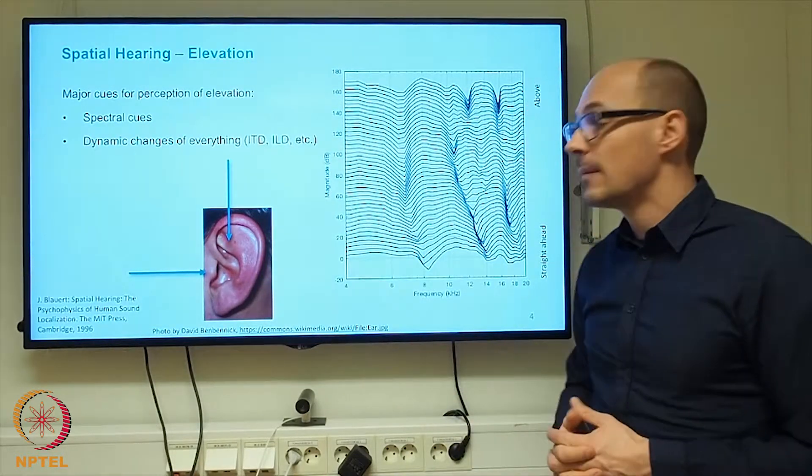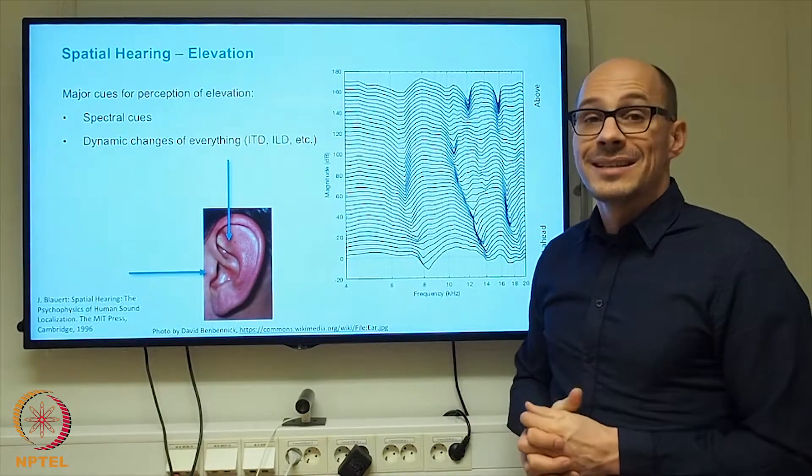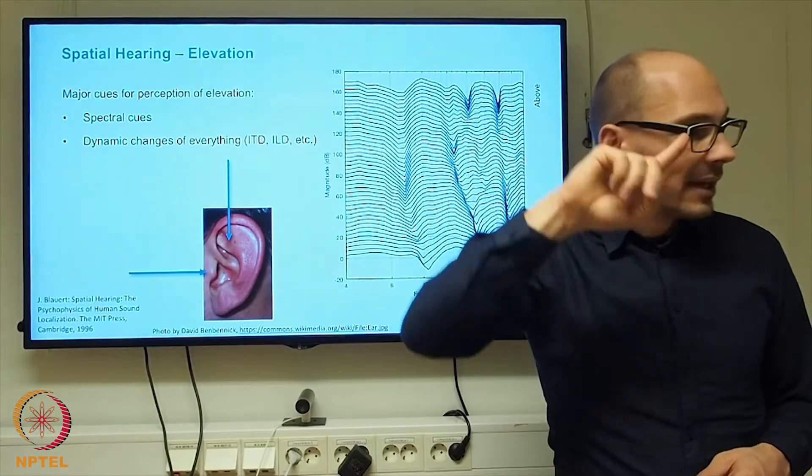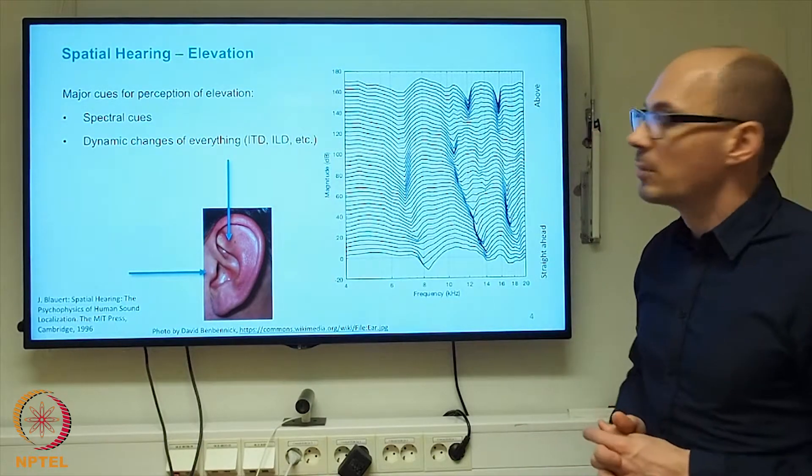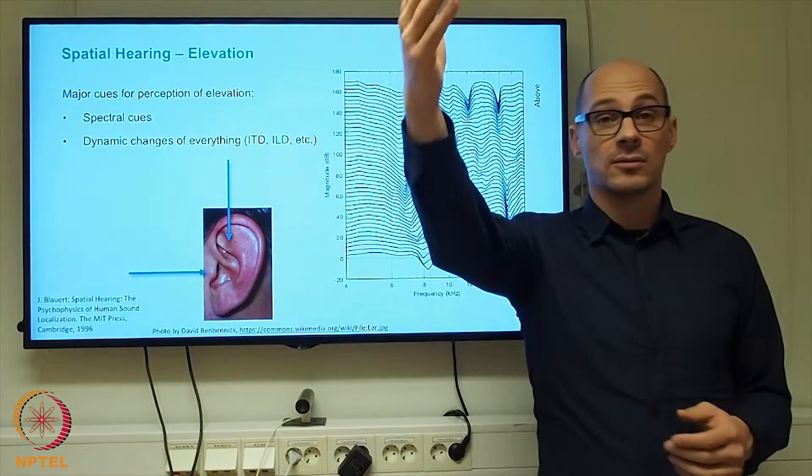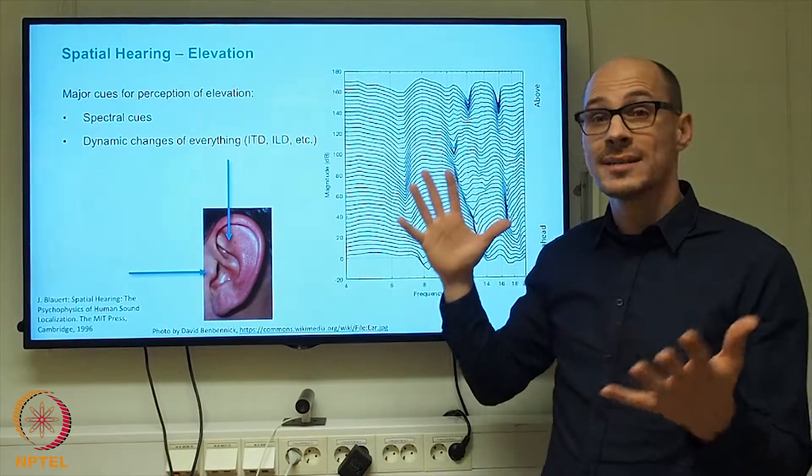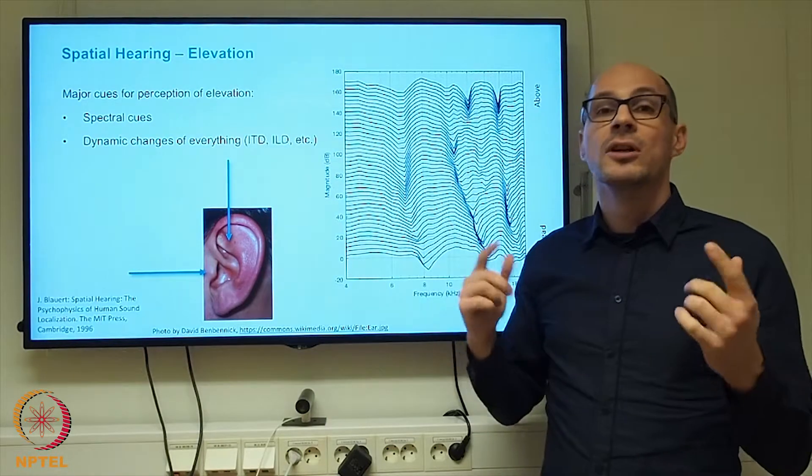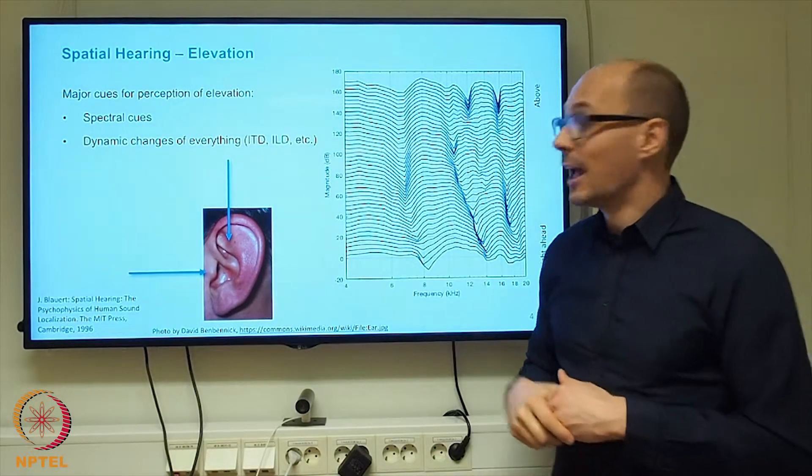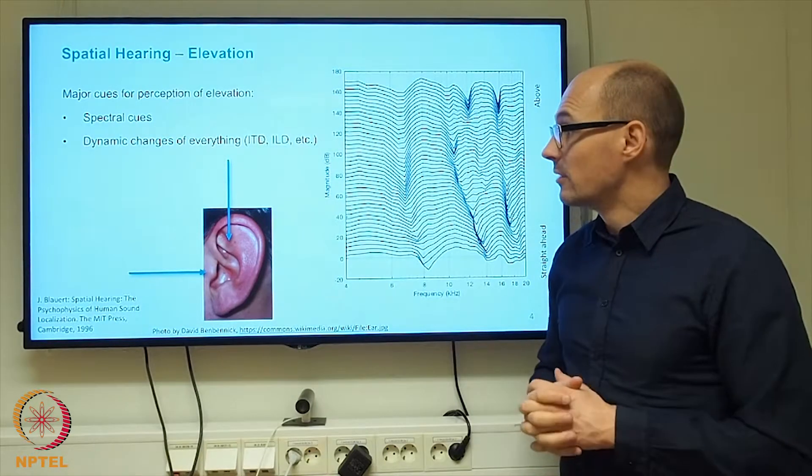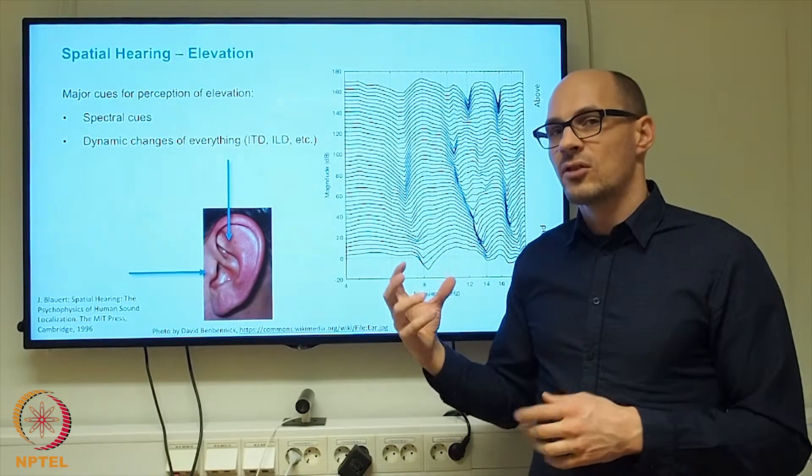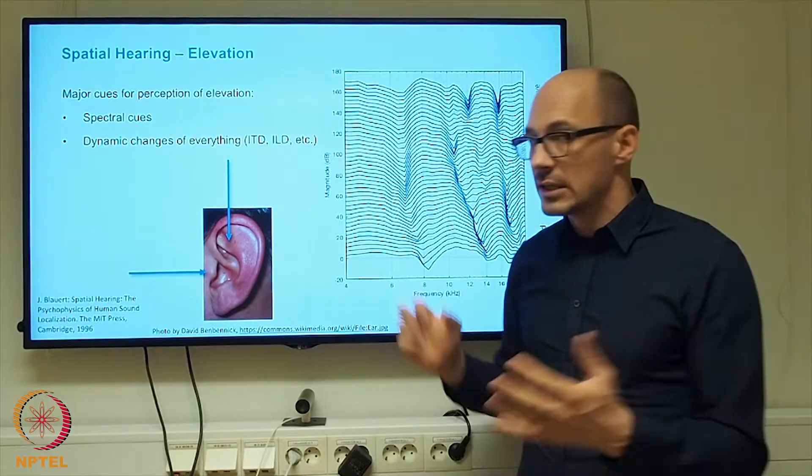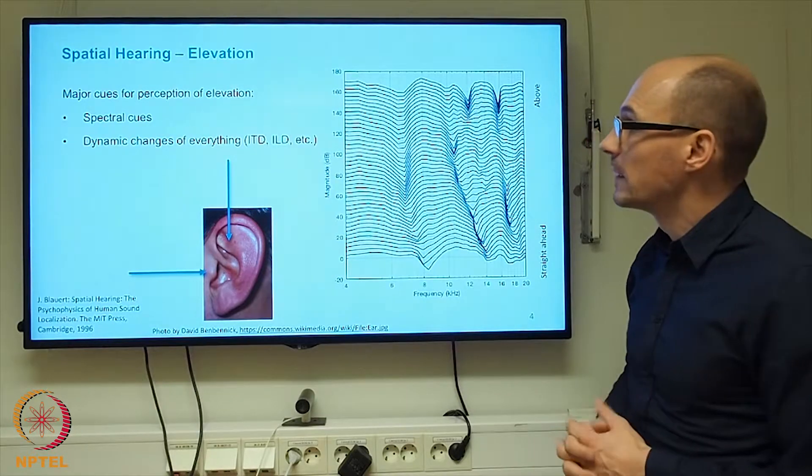The effect of the pinna, the outer ear, will be different depending on the angle. Similarly, a sound source that impinges from the rear will be guided differently into the ear canal compared to a sound signal from the front. This causes subtle but still detectable spectral differences, which our auditory system also recognizes, and this is another way how we can differentiate front and rear. But these cues are not as strong, they are not as reliable as the interaural differences and also the dynamic changes of the interaural differences.